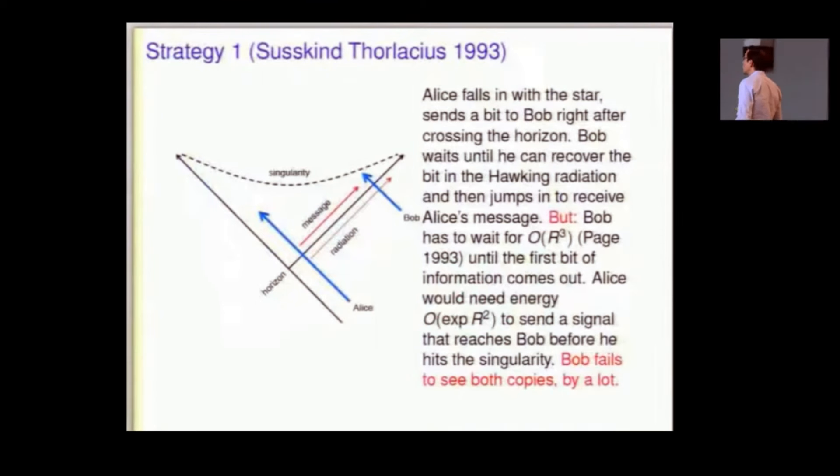So, the strategy that Susskind and Thorlacius came up with in 1993, in one of the sequence of early papers that established the notion of complementarity, you have an early observer who falls in with a star, carries a bit along with her, Alice. And, as soon as she crosses the horizon, as fast as possible, that's the best case, she tries to send this bit over to Bob up along the horizon like this, inside the black hole, but, you know, as fast as possible, out to Bob.